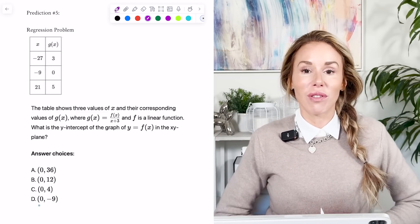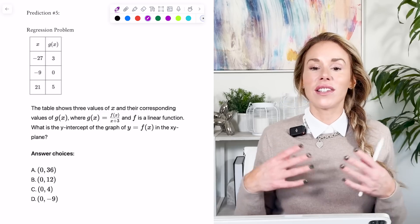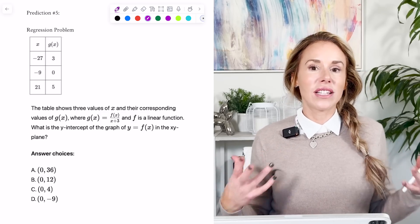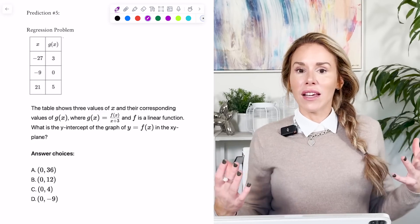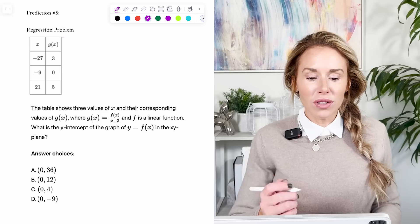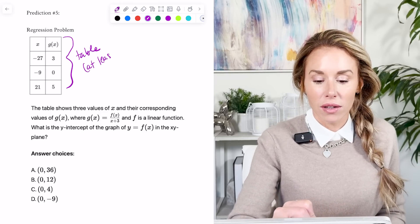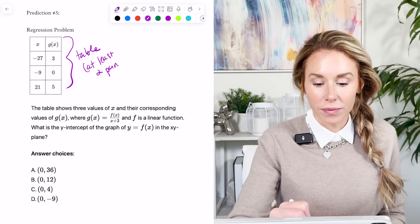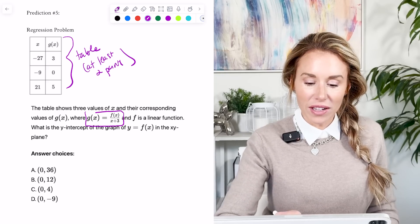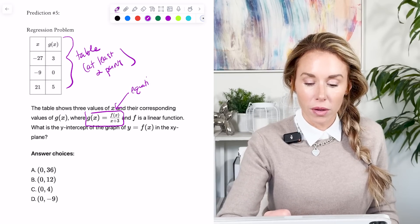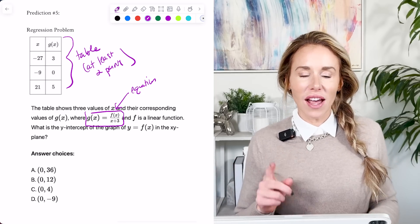My next prediction, prediction number five, deals with a regression problem. I think you're going to have one of these on your test. This is something that has been definitely trending lately. And it makes it so much easier to solve. So a key thing or an indicator that you can do a regression is if they give you a table or at least two points on the function. Okay. Then another indicator that you can do a regression is that they provide you with an equation.